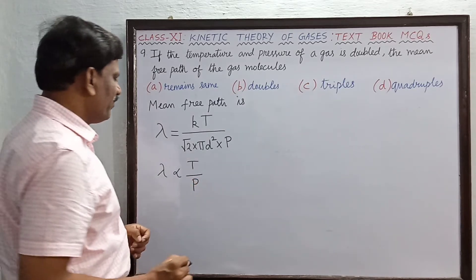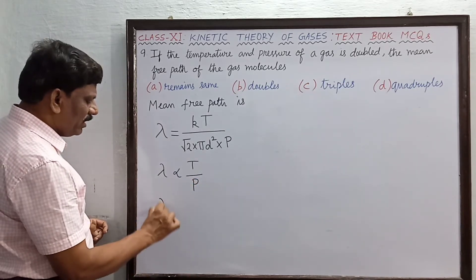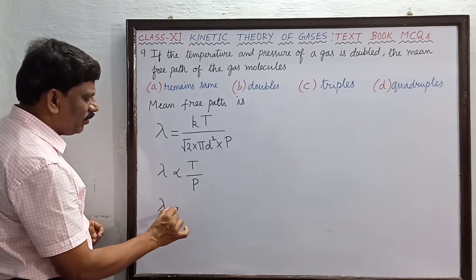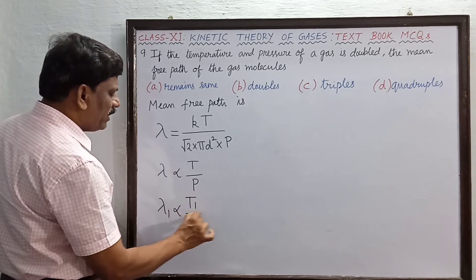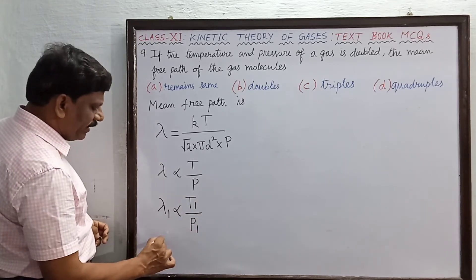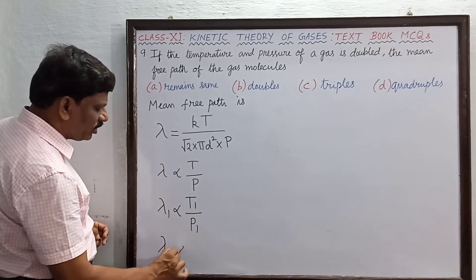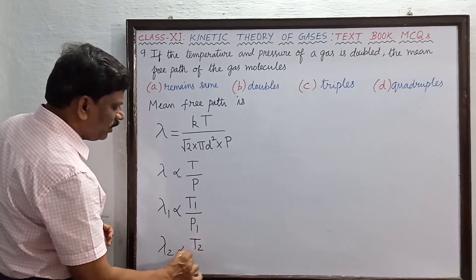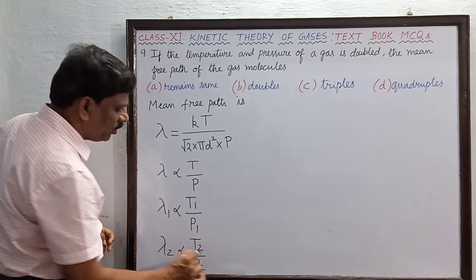First, the initial mean free path lambda 1 is proportional to T1 divided by P1. Lambda 2 is proportional to T2 divided by pressure P2.